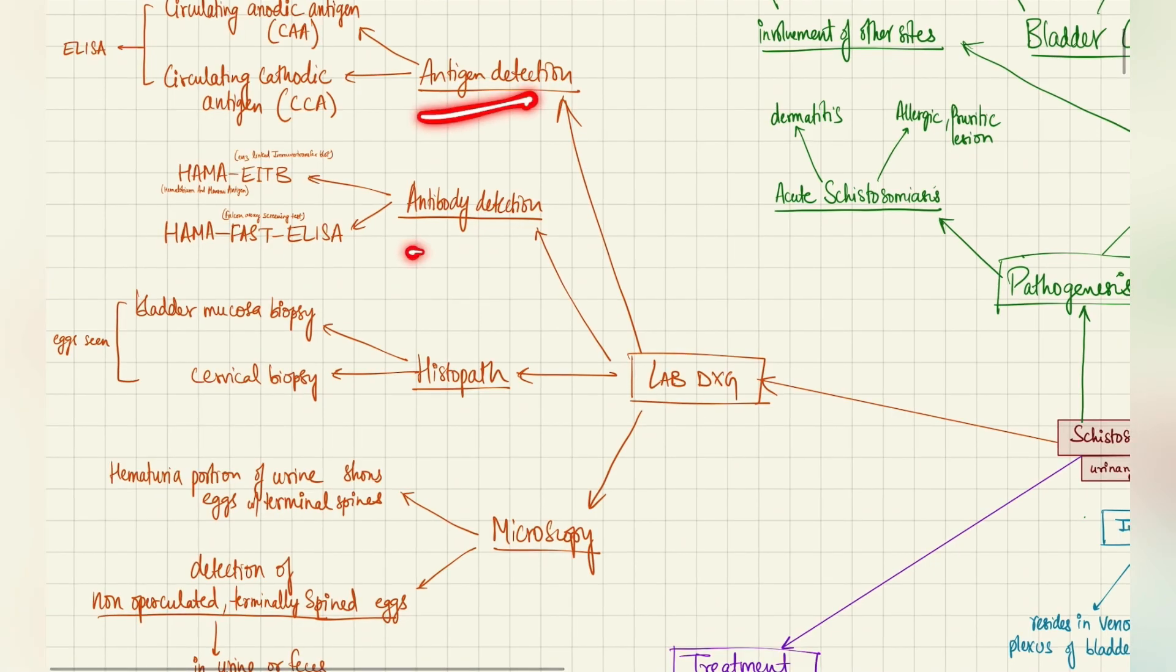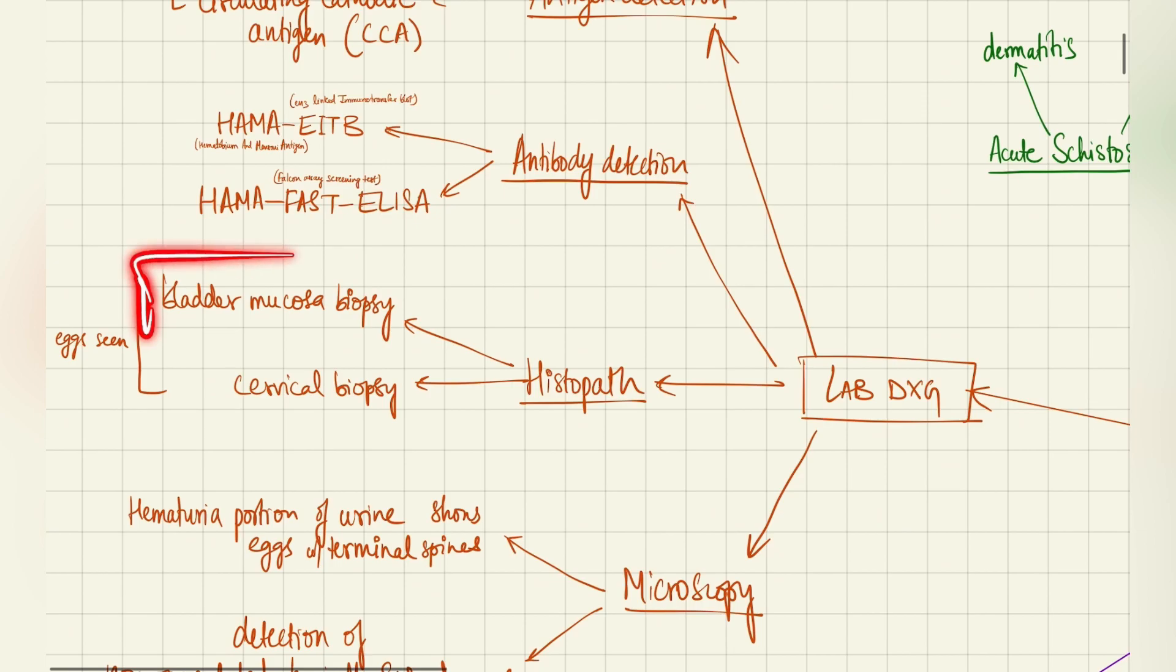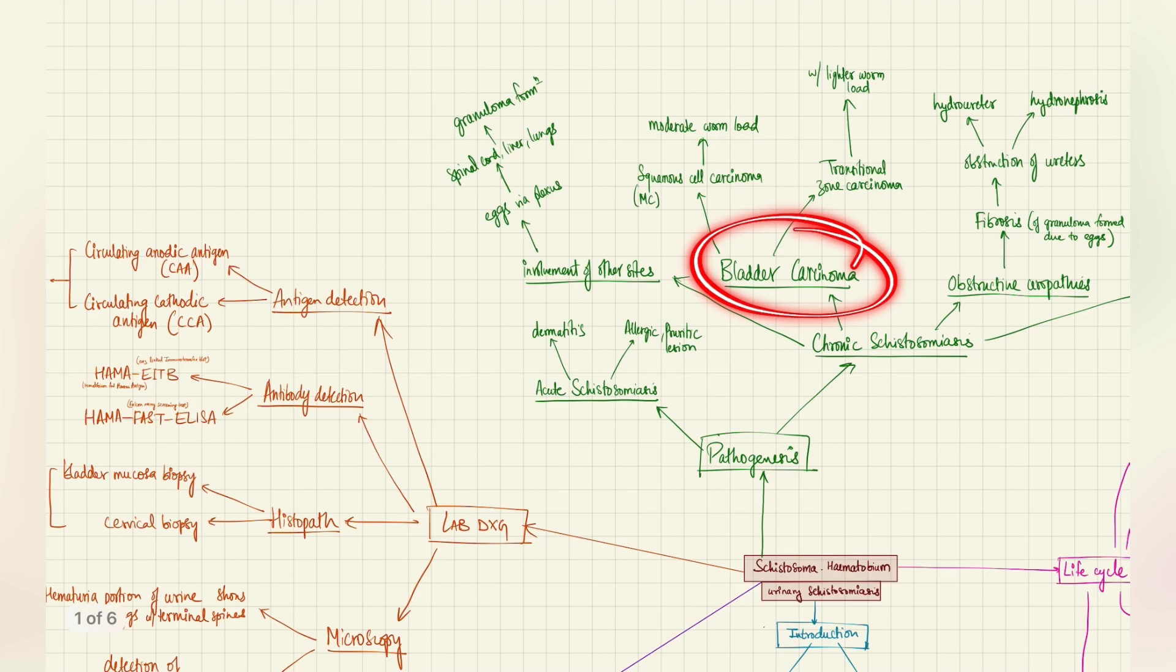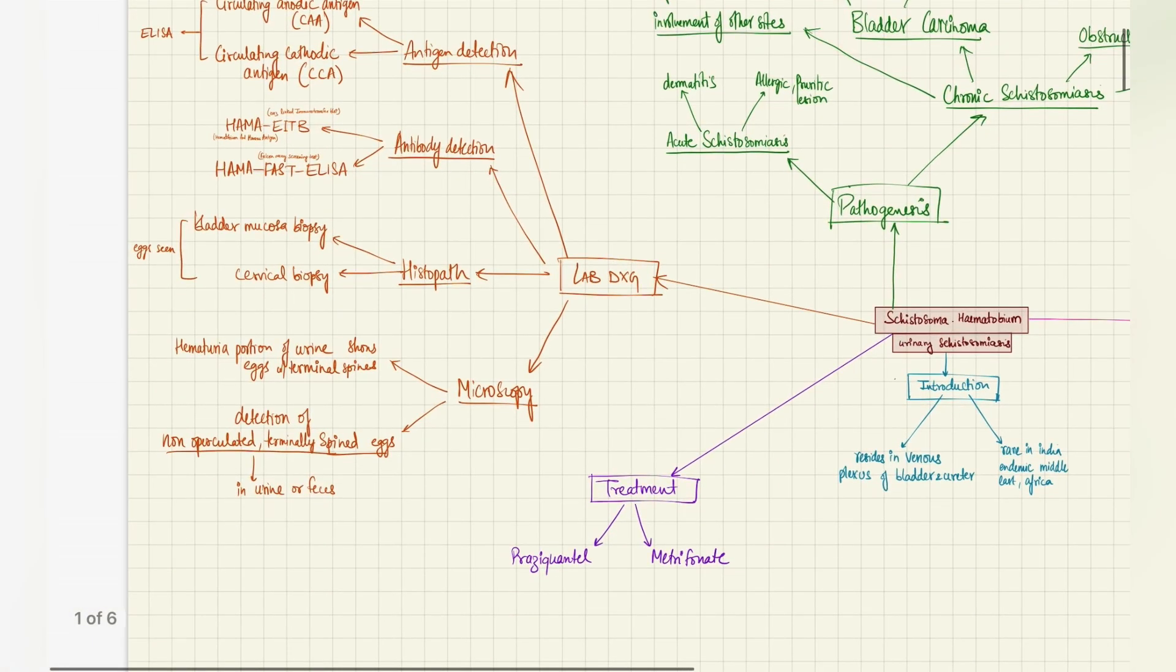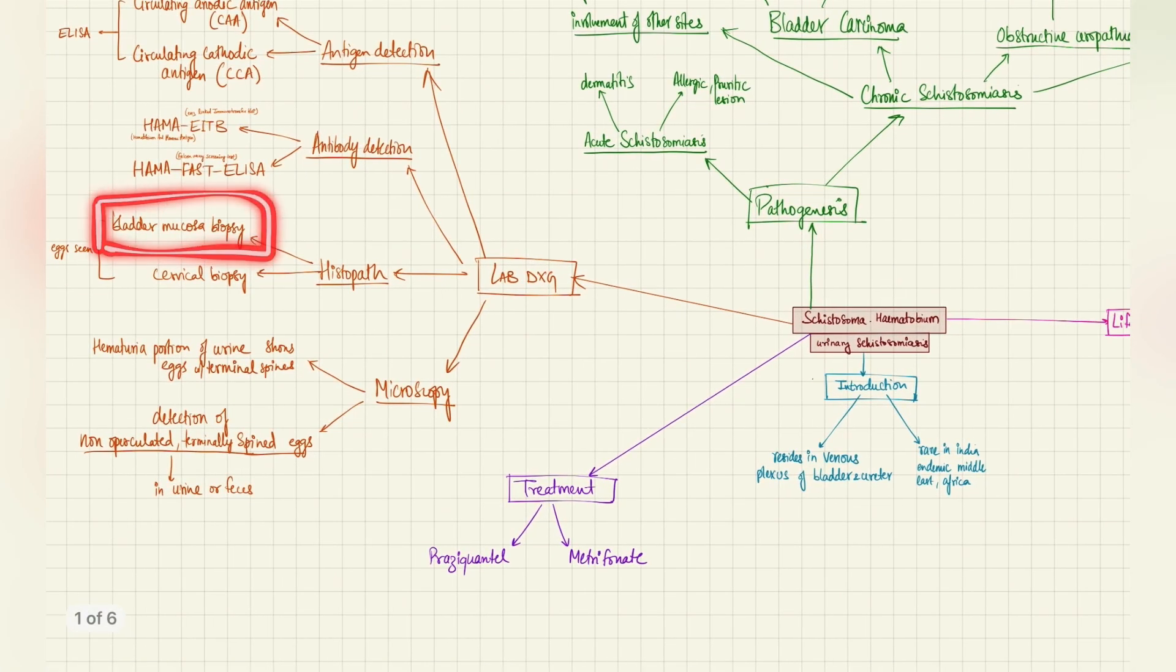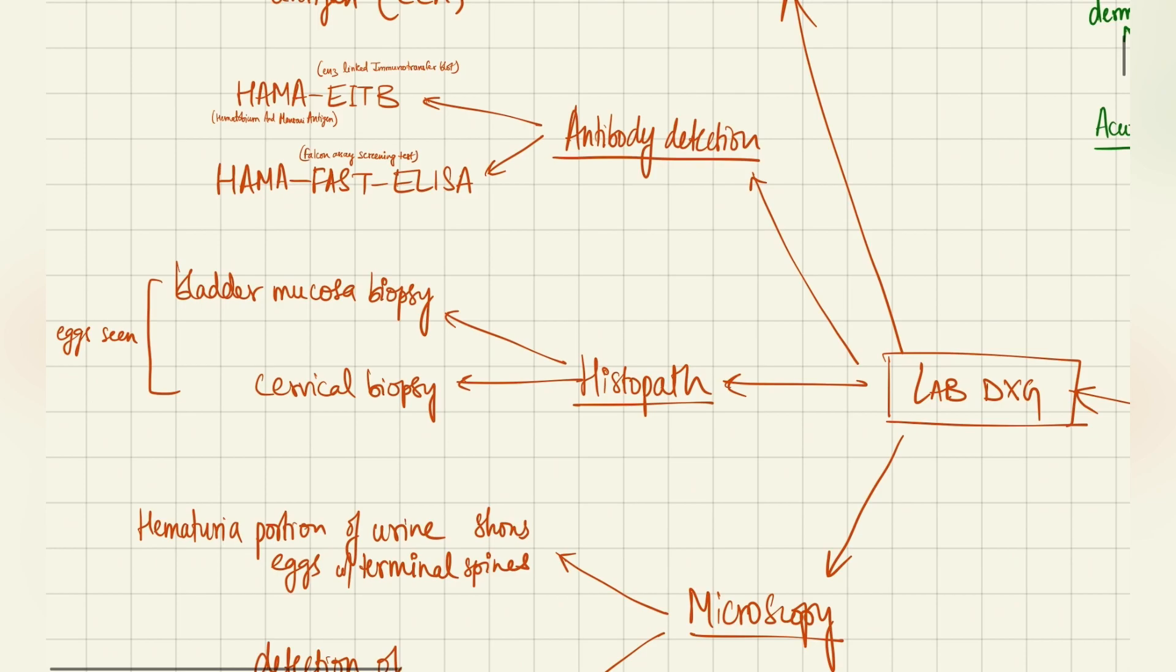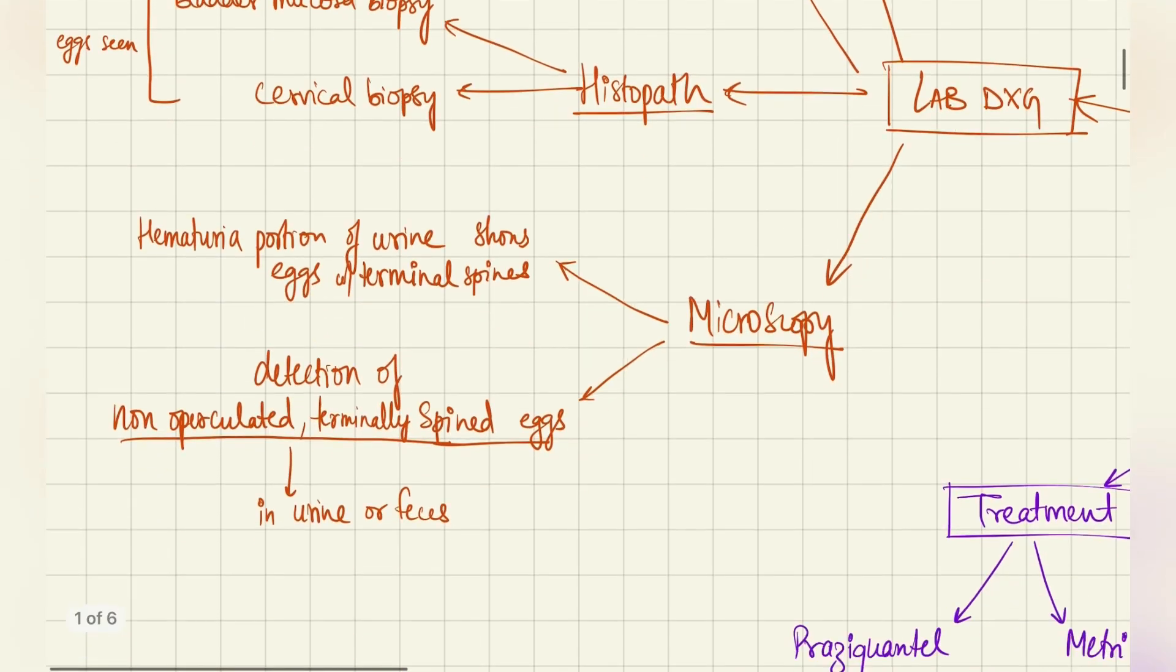After antigen detection, antibody detection, let's talk about histopathology. You will definitely do a bladder mucosa biopsy. Why? Because as mentioned, there's a risk of bladder carcinoma, squamous cell carcinoma mainly. So you will do a bladder mucosa biopsy to rule out cancer, and a cervical biopsy is also suggested. And here what you'll observe is eggs. The eggs will characteristically be seen.